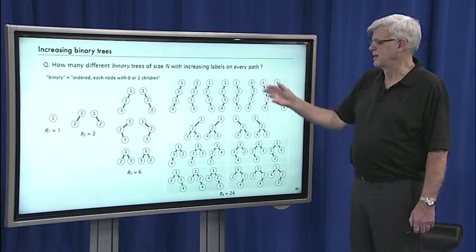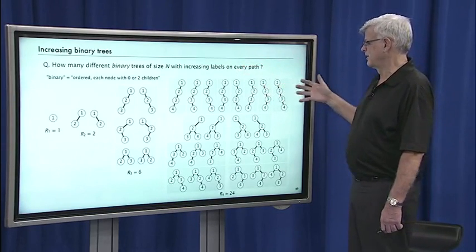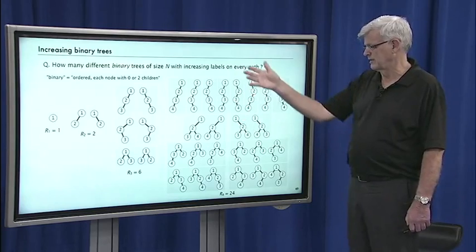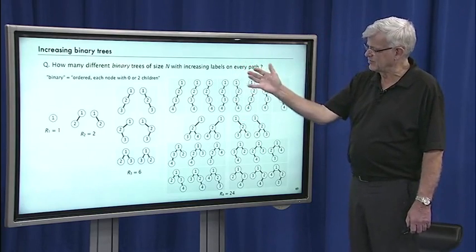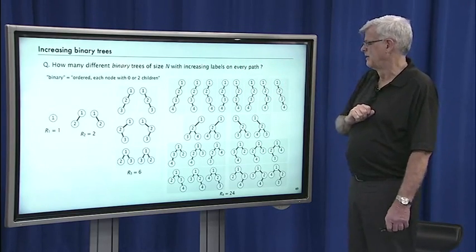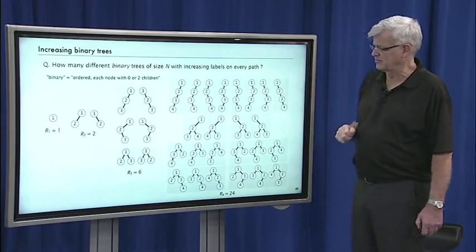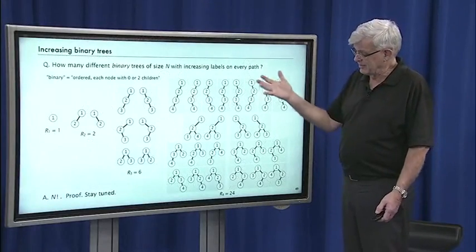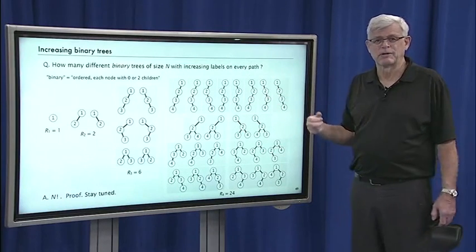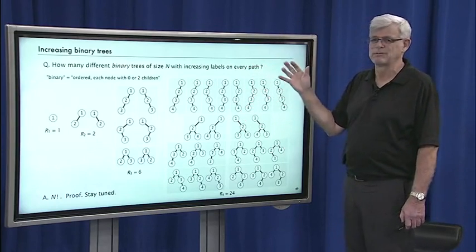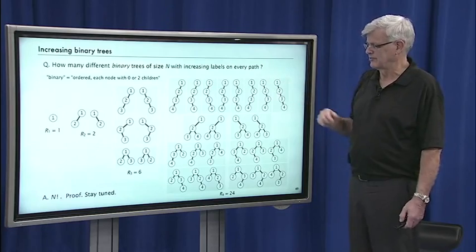For increasing binary trees — how many binary trees have increasing labels on every path? Every node has zero or two children and order is significant, so there are more possibilities. The number of labeled increasing binary trees of size n is n factorial. This result has a lot of structure behind it: it suggests a bijection, and indeed there is a bijection between increasing binary trees and permutations, which is quite easy to construct.